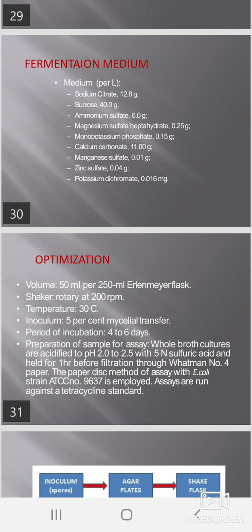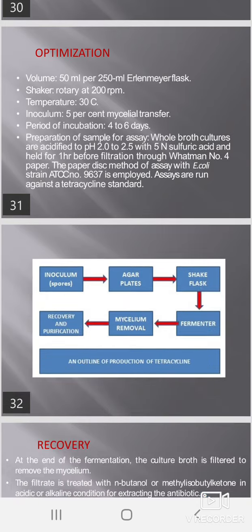Preparation of sample for assay: Whole broth cultures are acidified to pH 2 to 2.5 with sulfuric acid and held for one hour before filtration through Whatman No. 4 filter paper. The paper disc method of assay using an E. coli strain No. 9637 is employed. Assays are run against a tetracycline standard, as shown in the diagram.